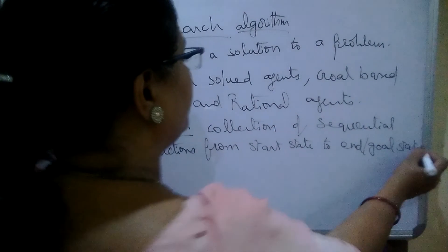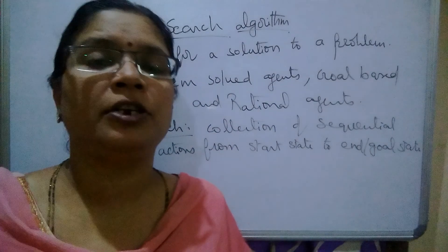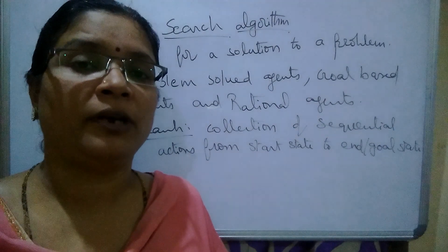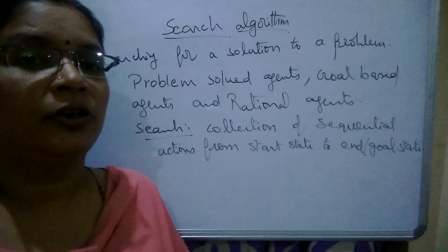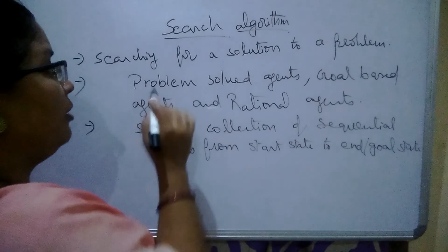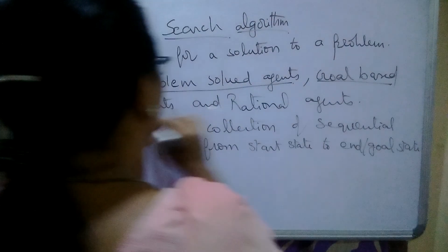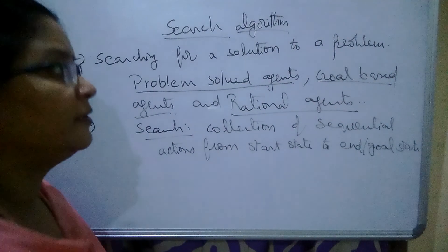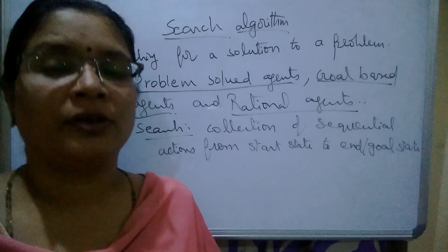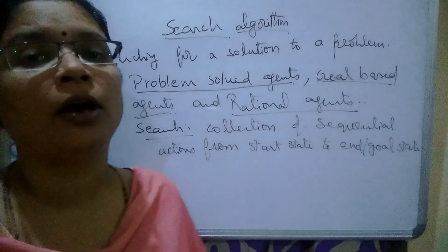It is a collection of sequential actions from the initial state to the goal state. We can define search like this. The search can be performed by artificial agents — problem solving agents, goal based agents, and rational agents — generating actions from the starting state to the goal state.